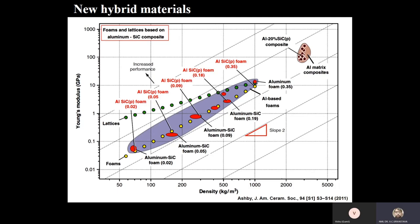Here you can see Young's modulus versus density, with a cluster for composites and aluminum foams. But if you make lattices of this material — lattice structures instead of foams — someone has optimized these properties such that for a given density the modulus is increasing. With a given material, you can architect the system so that the Young's modulus increases. You can architecture the material in the form of lattices to increase the Young's modulus — there is a possibility.